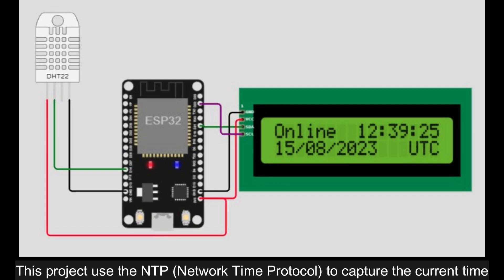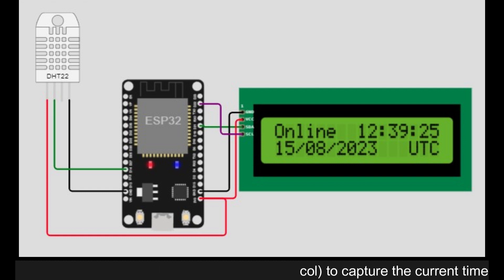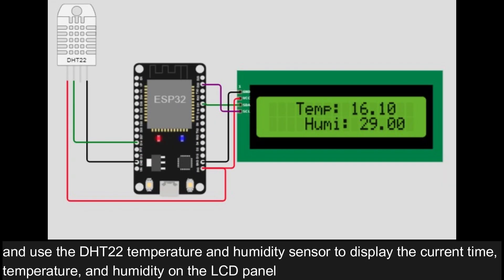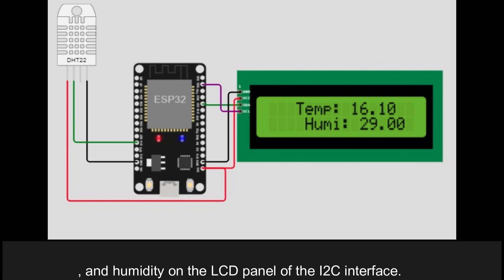This project used the NTP, network time protocol, to capture the current time, and used the DHT22 temperature and humidity sensor to display the current time, temperature, and humidity on the LCD panel of the I2C interface.